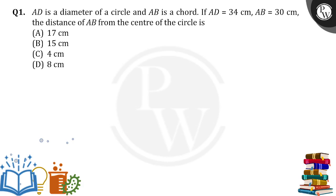Hello everyone. AB is the diameter of a circle and AB is a chord. If AD is equal to 34 cm and AB is equal to 30 cm, the distance of AB from the center of the circle is how much?